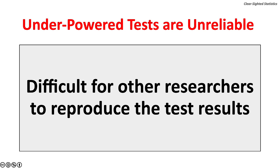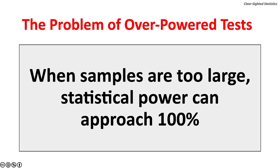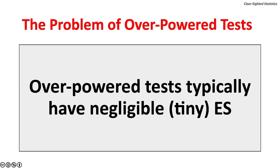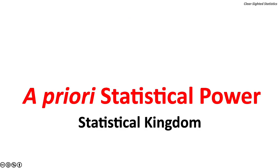When samples are too large, statistical power can approach 100%. When this happens, it is virtually impossible not to reject the null hypothesis. Overpowered tests typically have negligible, tiny effect sizes. A priori power calculations can be done using G-Power, a free program that runs on Windows and Macintosh computers. Statistical Kingdom is a website that can also calculate a priori power. Unfortunately, G-Power lacks the ability to calculate statistical power for this test, so we will use the calculator on the Statistics Kingdom website.